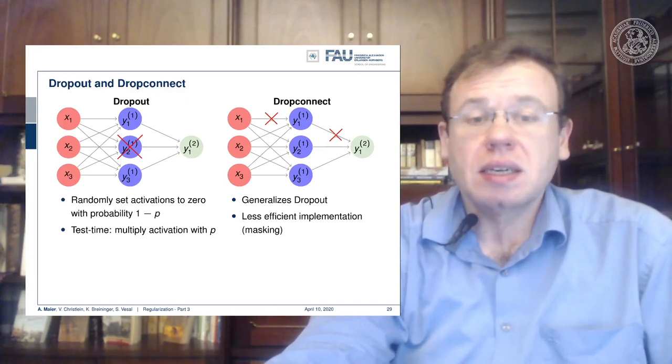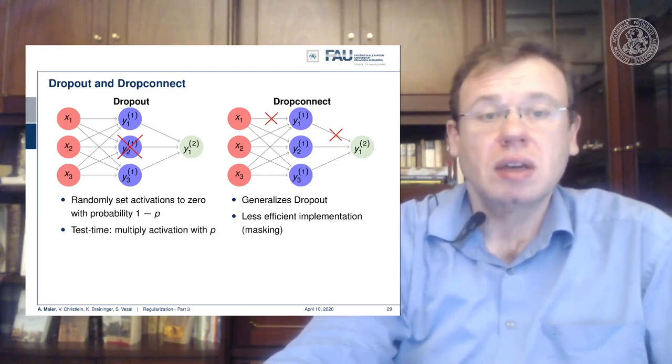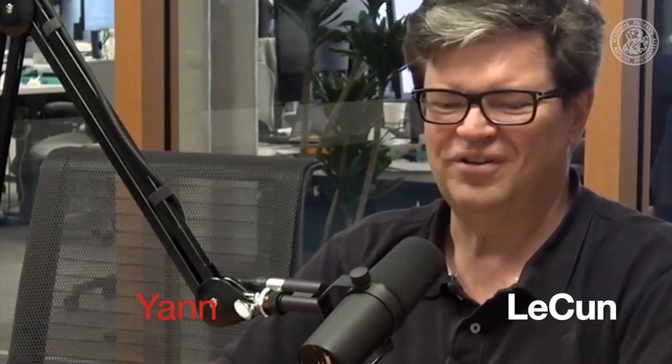Typically, the implementation is not as efficient because you have to implement this masking. It's simpler just to set one of the activations to zero. There's not much that you have to do in the implementation. And the masking, there you have to devise the mask, you have to multiply with the mask and so on. Machine learning is the science of sloppiness, really.